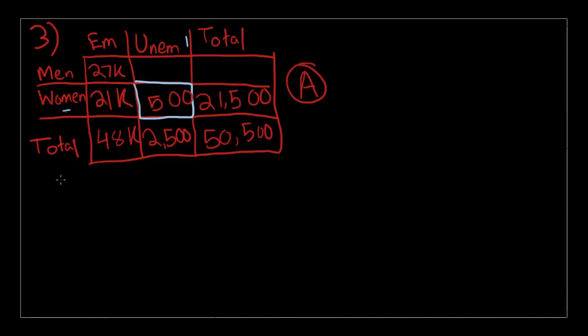Now, number four is a word problem. Let me read it out. A group of students washed cars to raise money. The net amount A in dollars raised by washing k cars is given by the function A of k is equal to 4k minus 30. If the group washed 15 cars, what is the net amount they raised?